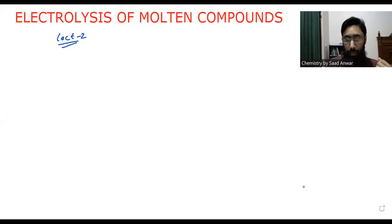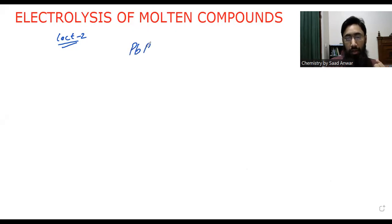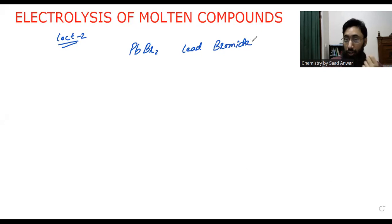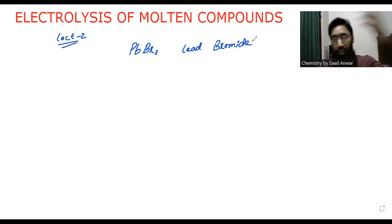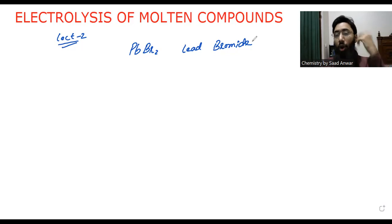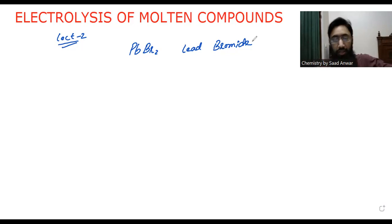I have chosen a molten compound — for example, lead bromide, PbBr₂. I will do electrolysis of lead bromide, and you will see which product will appear at the cathode and which product will appear at the anode. Usually in the exam they will ask you to tell which product will appear at cathode and which product will form at anode. When we do electrolysis of any molten compound versus an aqueous compound, the story is entirely different.